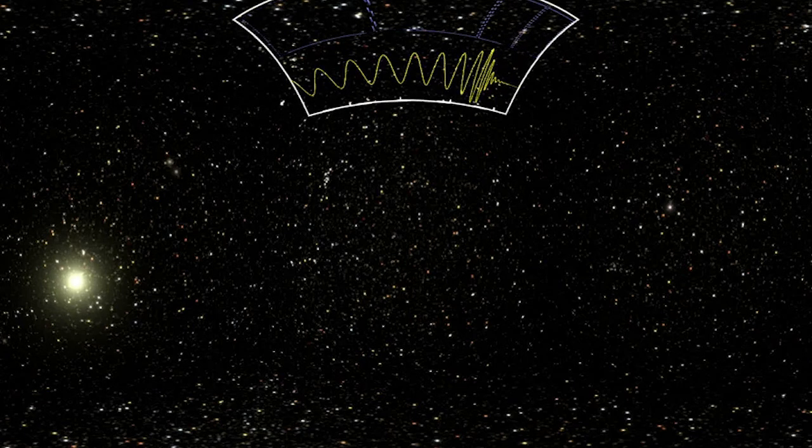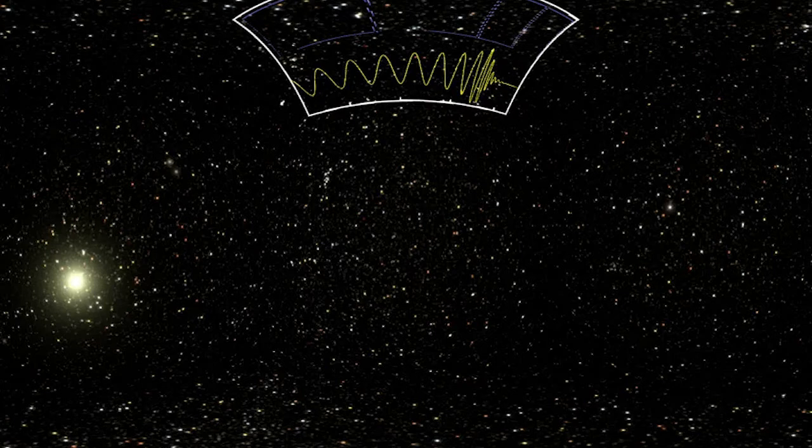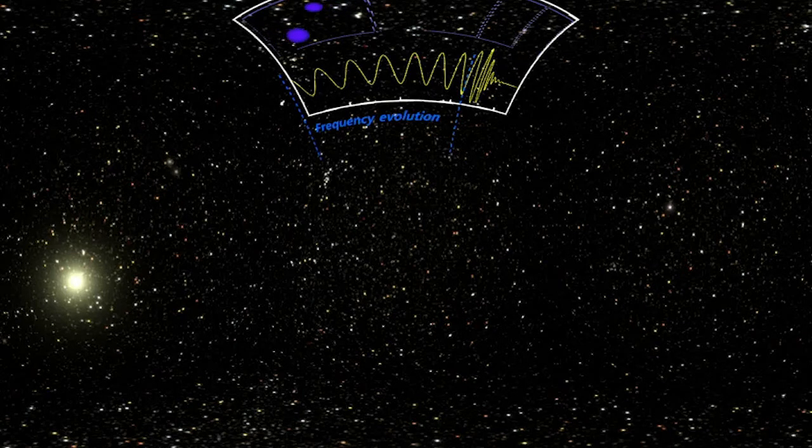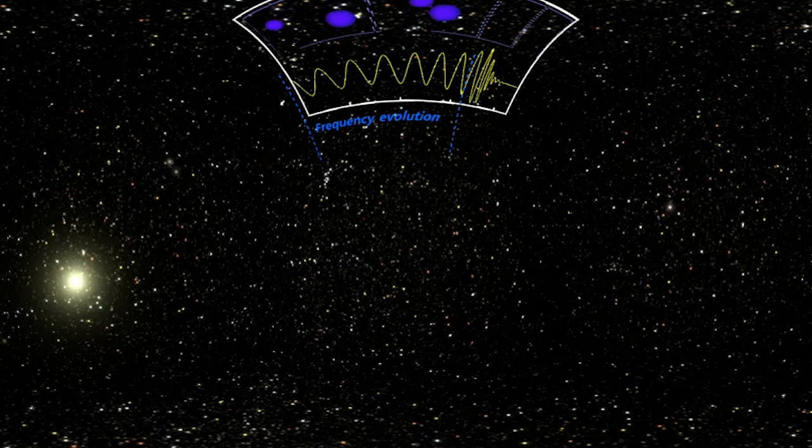This is a model of the same event that I showed data for a moment ago. What we see here is that the frequency of this signal is changing. What we can tell is that at early times, the two black holes were farther apart and were orbiting each other more slowly.